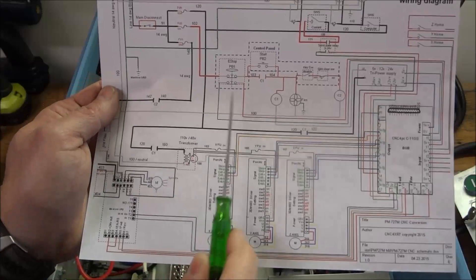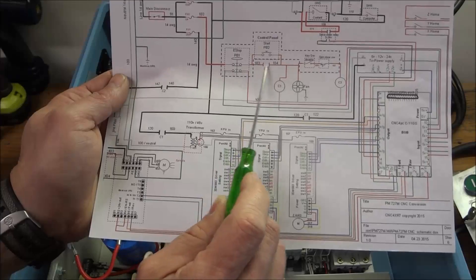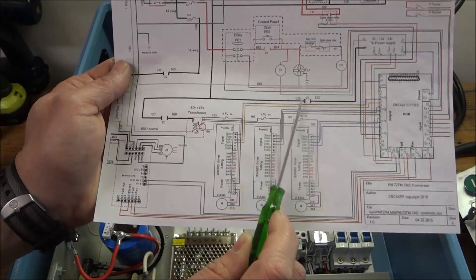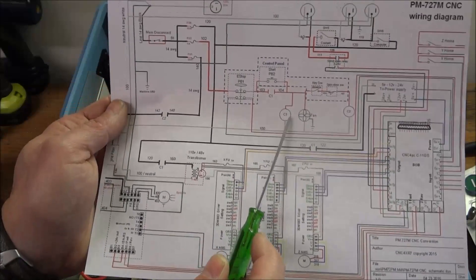So you can kind of see how the holding circuit gets its name. It holds these contacts closed by keeping C1 coil energized.